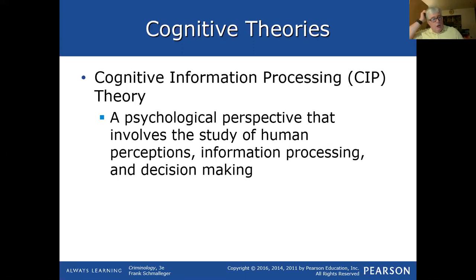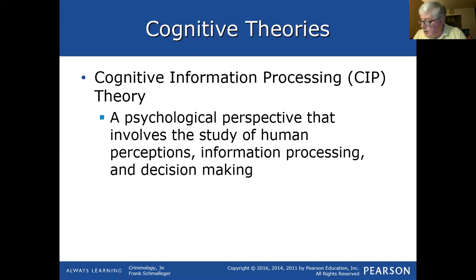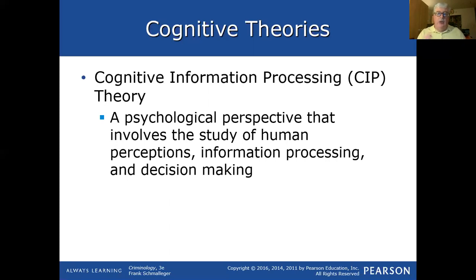Cognitive information processing theory is a psychological perspective involving the study of human perceptions, information processing, and decision-making — how we go through complex thought processes. It's quite possible that someone doesn't have the tools to properly process information and make a relevant decision. Going back to classical theory, we think people can understand the consequences of their actions, but someone may lack the cognitive capacity to process that information and make a sound decision.